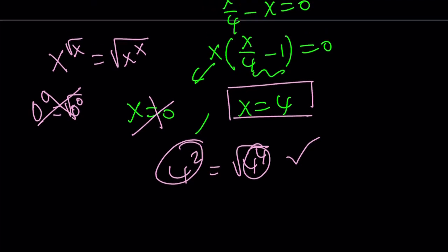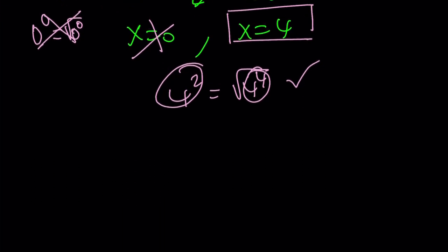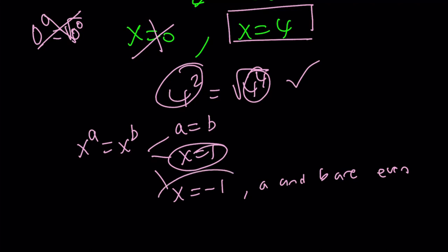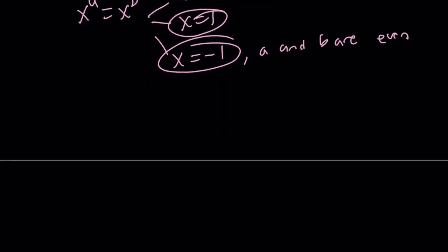But are those the only solutions? No. We still have to check something else. So, when you have something like x to the power of a is equal to x to the power of b, you know that a could equal b, which is something that we went through already. Or we could have x equals 1. Or we could have x equals negative 1. But in this case, a and b are both even. So, we still have to check these two cases to see if they are possible solutions.